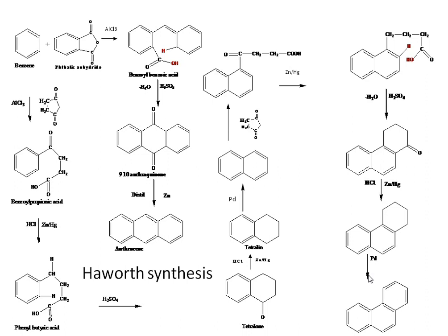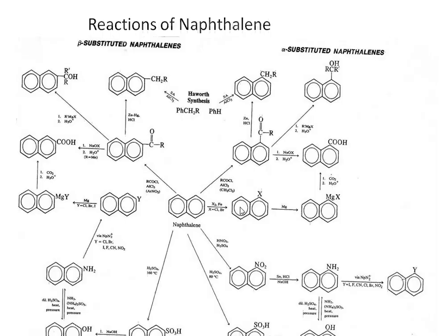To summarize phenanthrene synthesis: naphthalene reacts with succinic anhydride to give 3-oxo-3-phenanthrenebutyric acid (naphthalenebutyric acid); Clemmensen reduction reduces the carbonyl group; removal of water by cyclization gives a cyclized compound; reduction gives 1,2,3,4-tetrahydrophenanthrene; and final Clemmensen reduction with palladium gives phenanthrene.